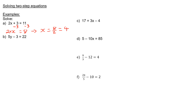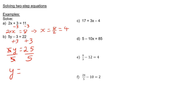In question B, the first thing I need to do is get 5y on its own. So I'm going to add 3 to both sides. This will leave me with 5y is equal to 25. To get y on its own, I'm going to divide both sides by 5, which leaves me with y is equal to 25 divided by 5, which is 5.